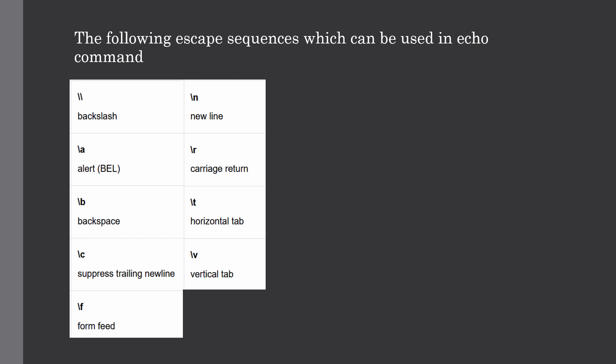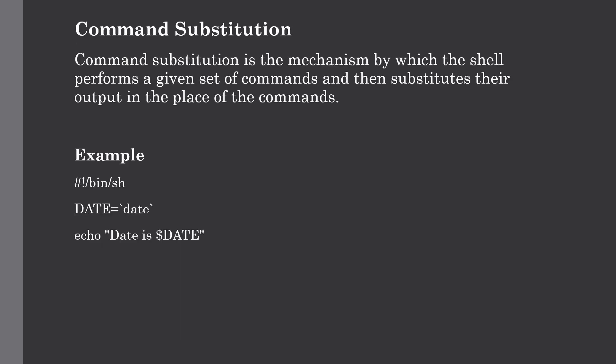Now let us discuss the two types of substitution in shell scripting: command substitution and variable substitution. Command substitution is a mechanism by which the shell performs a given set of commands and then substitutes their output in place of that command. If you want to store the result of any command into a variable, you can do that using command substitution — write your command in backticks and assign it to a variable.